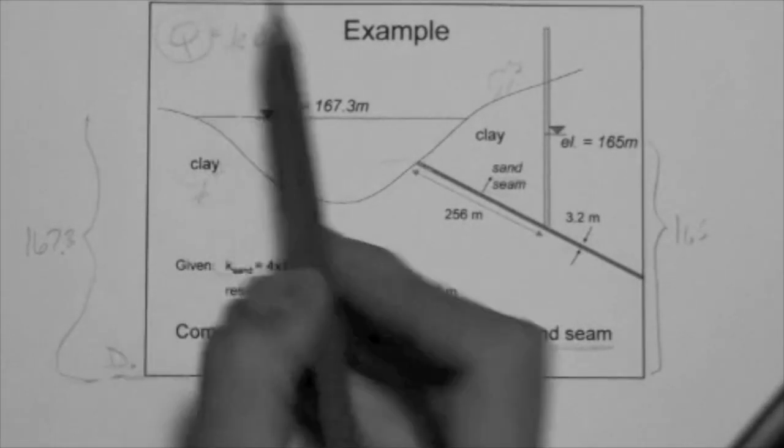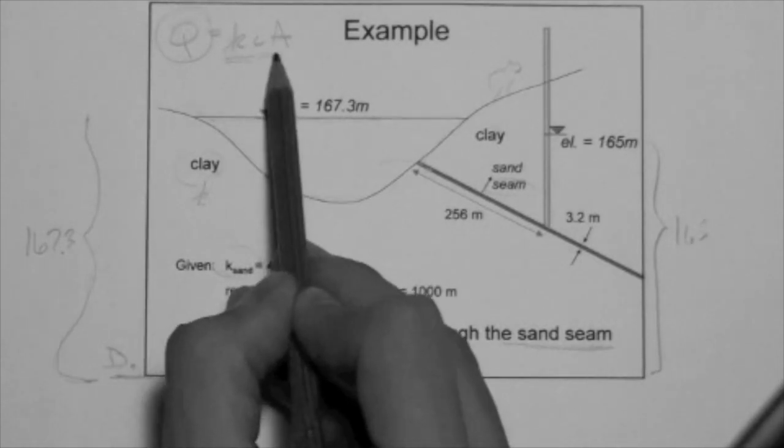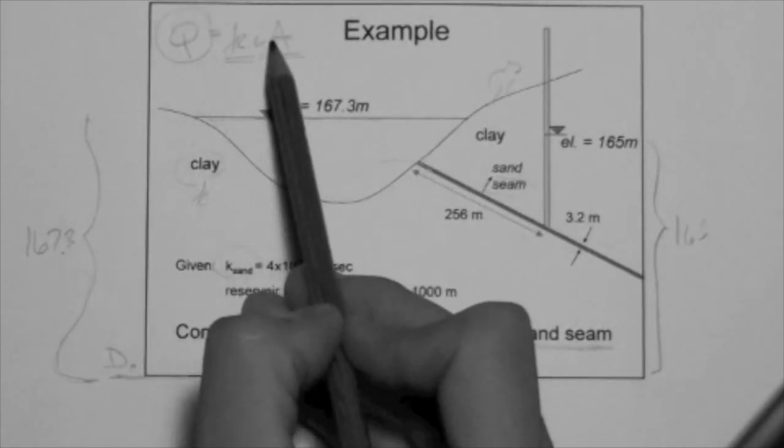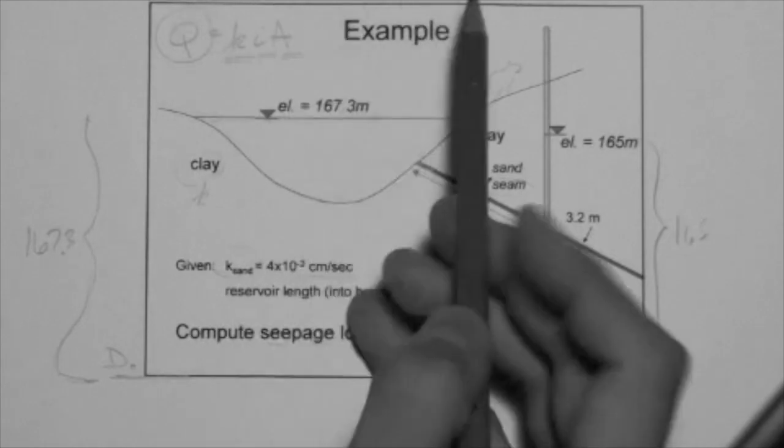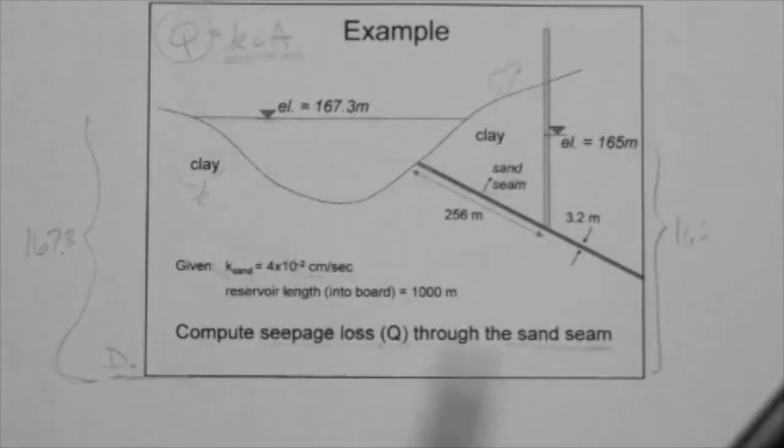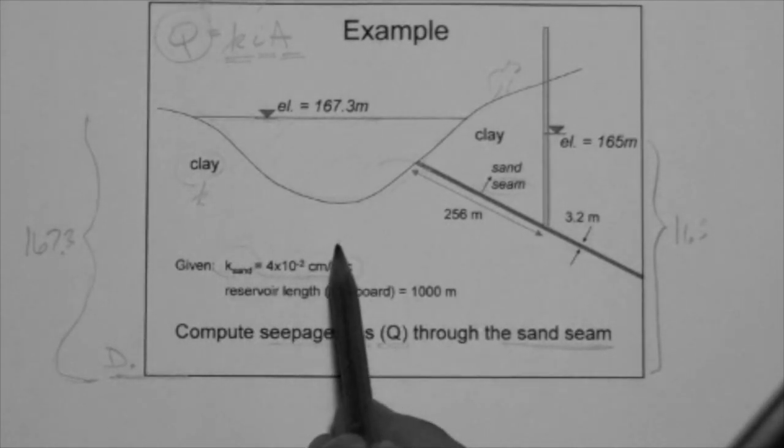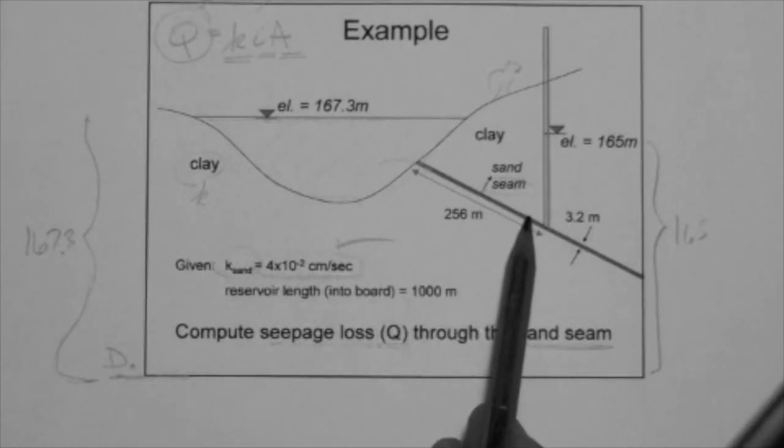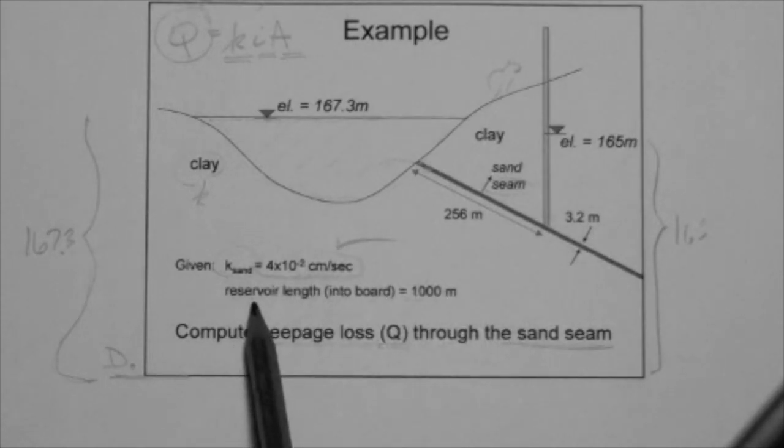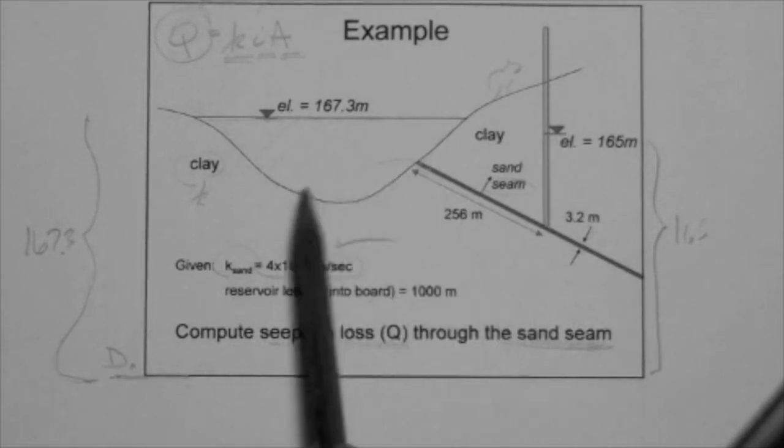All we have to do is determine these three parameters so that we can use the law to get Q. K is already given because the K of the seam, of the soil that makes the seam, the sand, so that's given.